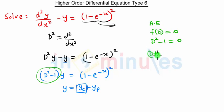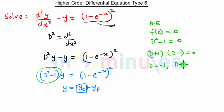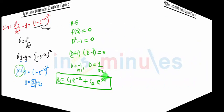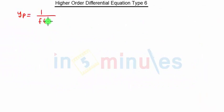D squared minus 1 equal to 0 can be split as (D plus 1) into (D minus 1) equal to 0, so the roots are D equal to minus 1 and D equal to 1. The complementary function is given by yc equal to C1 e raised to minus x plus C2 e raised to x. This is our yc.